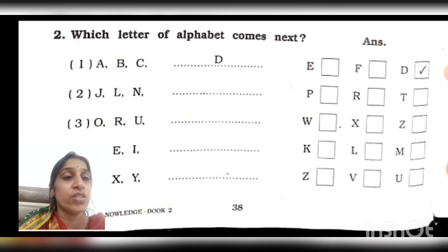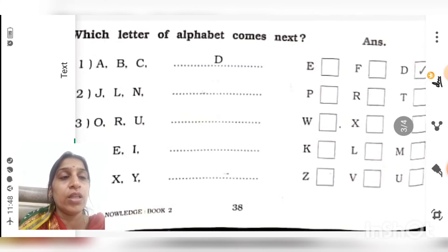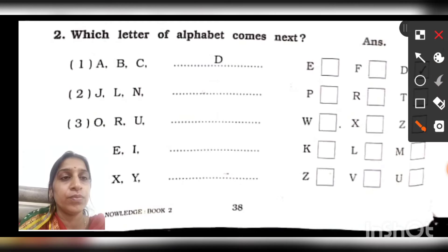Here are the options: P, R, and T. We will take option P. So here we will write P. Isn't it easy? Next.